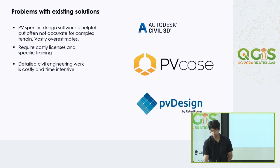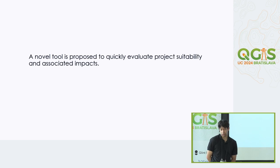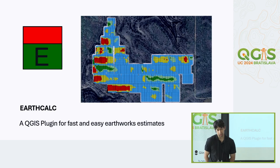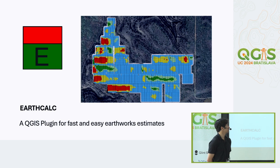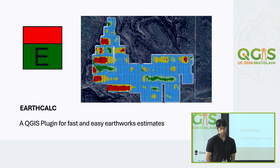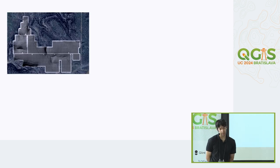A novel tool is proposed to quickly evaluate project suitability and associated impacts, and that tool is a plugin I made called EarthCalc. EarthCalc is a QGIS plugin for fast and easy earthwork estimates. The concept is that you end up with a visual representation generated very quickly of the locations on a site where cut and fill would be required, and because it's so fast you can iterate quickly and integrate it into your design very early on.